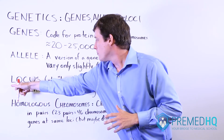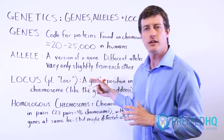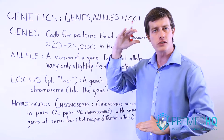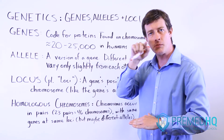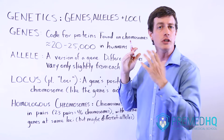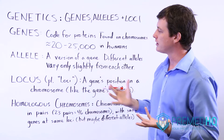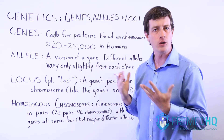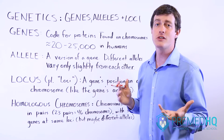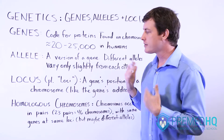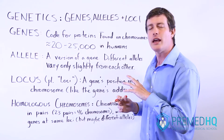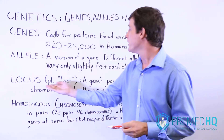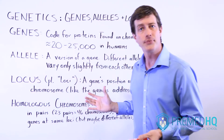When looking at a chromosome, you'll encounter the term locus, or the plural loci. A locus is the position of a gene on its chromosome. You can think of the locus as the gene's address — where to find that gene when you're mapping out a chromosome. Gene mapping is ongoing and helps us locate exactly where on a chromosome a particular gene will be found. So the locus is essentially the location of that gene.